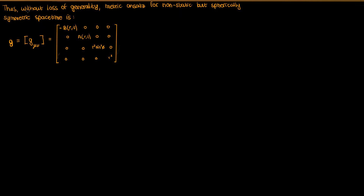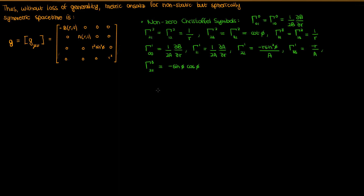Let's now find the nonzero Christoffel symbols corresponding to this metric ansatz, followed by the nonzero Ricci tensor components, which we'll plug into our vacuum Einstein field equations to ultimately show that the dependence of A and B on T doesn't really matter — you get the same metric anyway. The nonzero Christoffel symbols for this time-dependent ansatz are the exact same as those for the static metric ansatz, but there are a few additional ones that come up as a result of the time dependence.